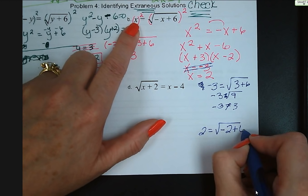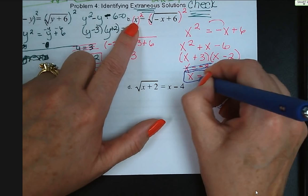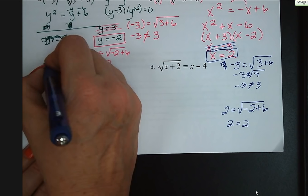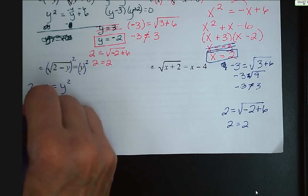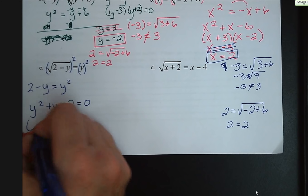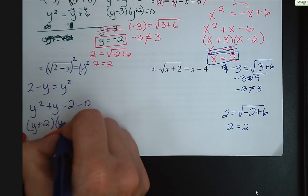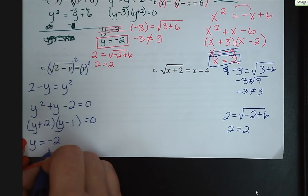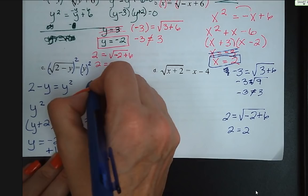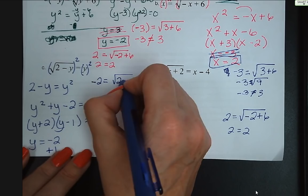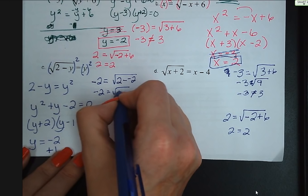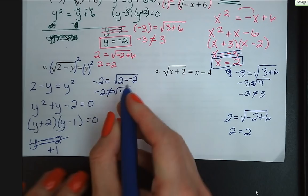Letter c: square both sides — 2 minus y equals y squared. Add y and subtract 2: y squared plus y minus 2 equals 0. That factors to y plus 2 and y minus 1, so y equals negative 2 and y equals positive 1. Checking y equals negative 2: square root of 2 minus negative 2 is square root of 4 — negative 2 does not equal 2. Checking y equals 1: 1 equals the square root of 2 minus 1, which is square root of 1 — yes, that works.